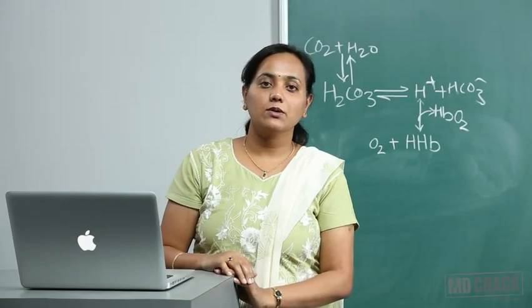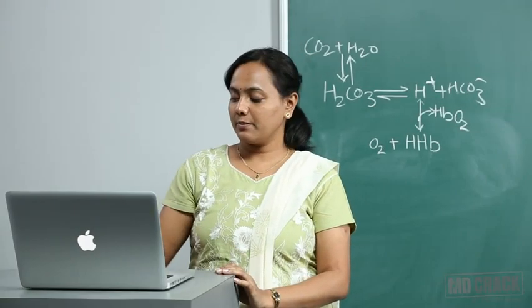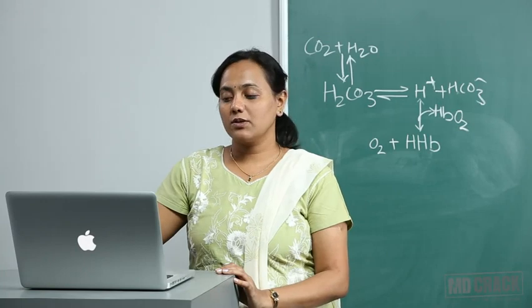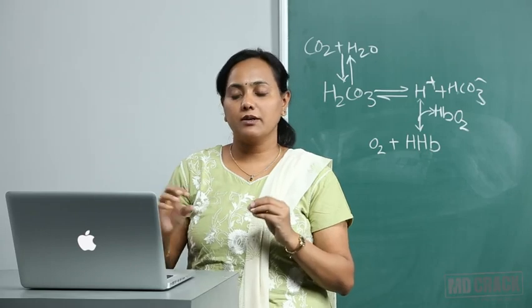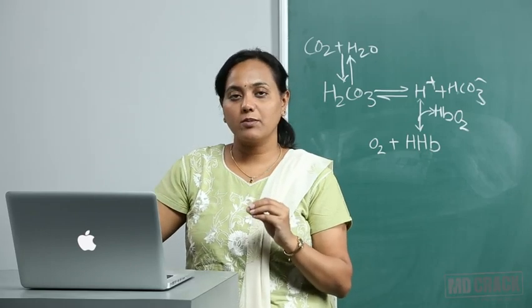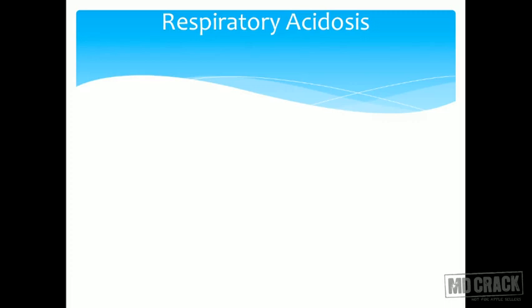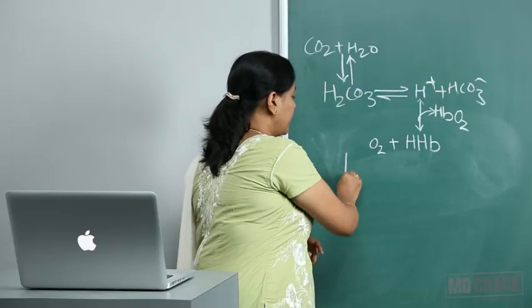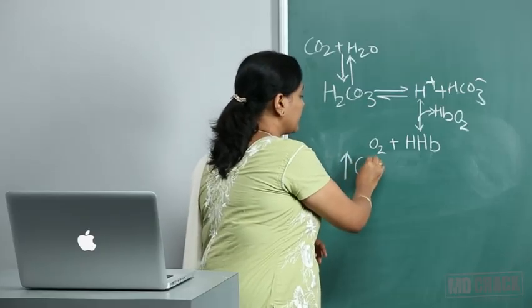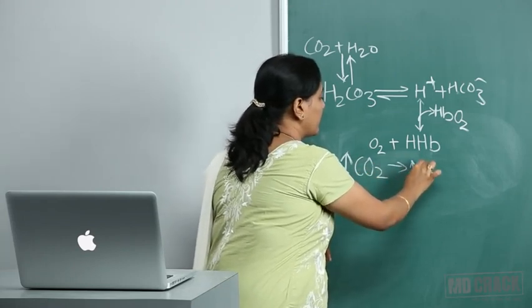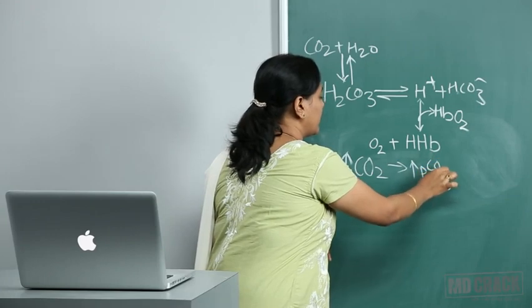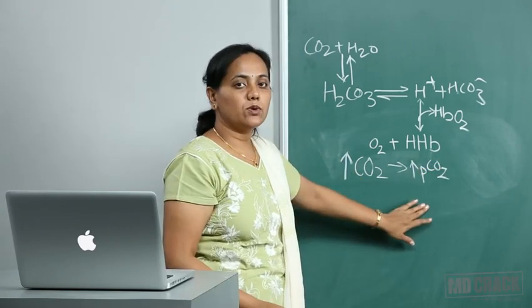I'll talk about disorders of acid-base balance. The first disorder is respiratory acidosis. Always remember that carbon dioxide is an acid, so the primary defect will be increased carbon dioxide — that is, increased pCO2. Remember, the normal calibrated value is 40, so whenever the pCO2 increases, we call it respiratory acidosis.